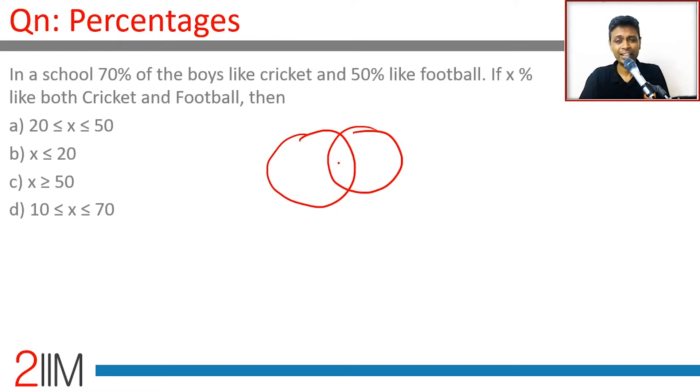Think about this visually. x will be high when these two Venn diagram circles are squeezed together—the overlap keeps increasing. What's the best case scenario? When one is sitting inside the other. The 50% sits inside the 70%, or anybody who likes football also likes cricket.